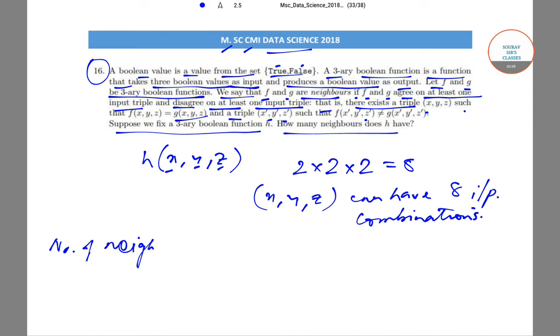Number of neighbors of h will be, out of eight input combinations, agrees on at least one, so 8 choose 1, out of eight input combinations agrees on at least two...